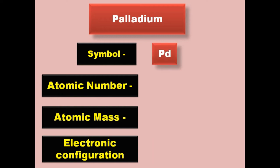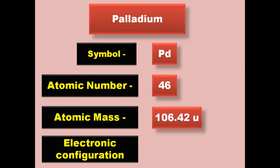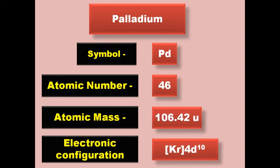Palladium has symbol Pd, atomic number 46, atomic mass 106.42, electronic configuration [Kr] 4d10. Palladium is a transition metal and exists in solid form at room temperature.